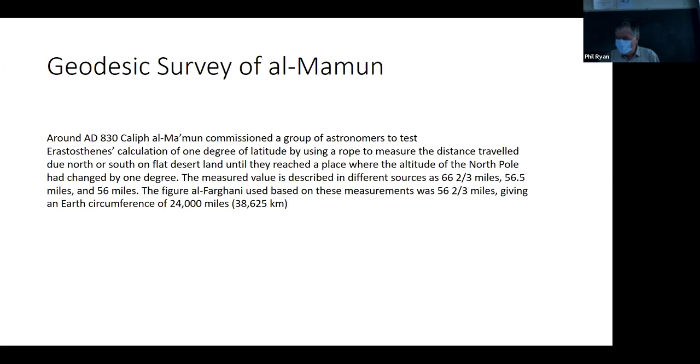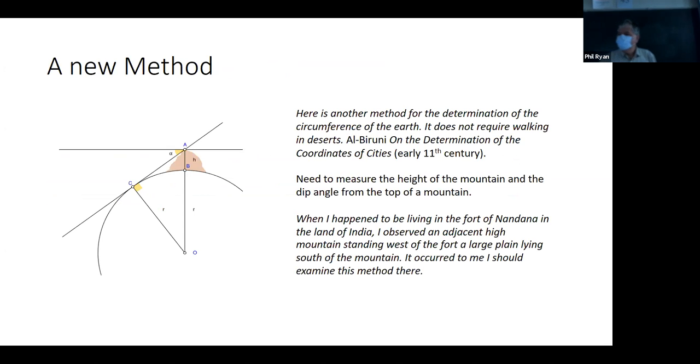So where does trig come in? So Al-Biruni kind of thought of a different way to measure the size of earth. And I think he was making a joke here. Because he had his famous book on the determination of the coordinates of cities. So, I mean, basically, how do you make a map of the world or like a map? So what you basically do is you find places like a city or whatever, and you figure out its latitude and longitude.